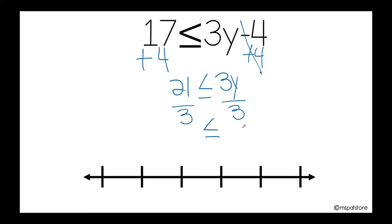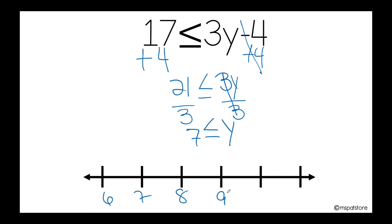So I'm going to cancel the 3, and I have y alone, which is my main goal. 21 divided by 3 is 7. So now you're ready to graph your solution: 6, 7, 8, 9, 10, and 11.